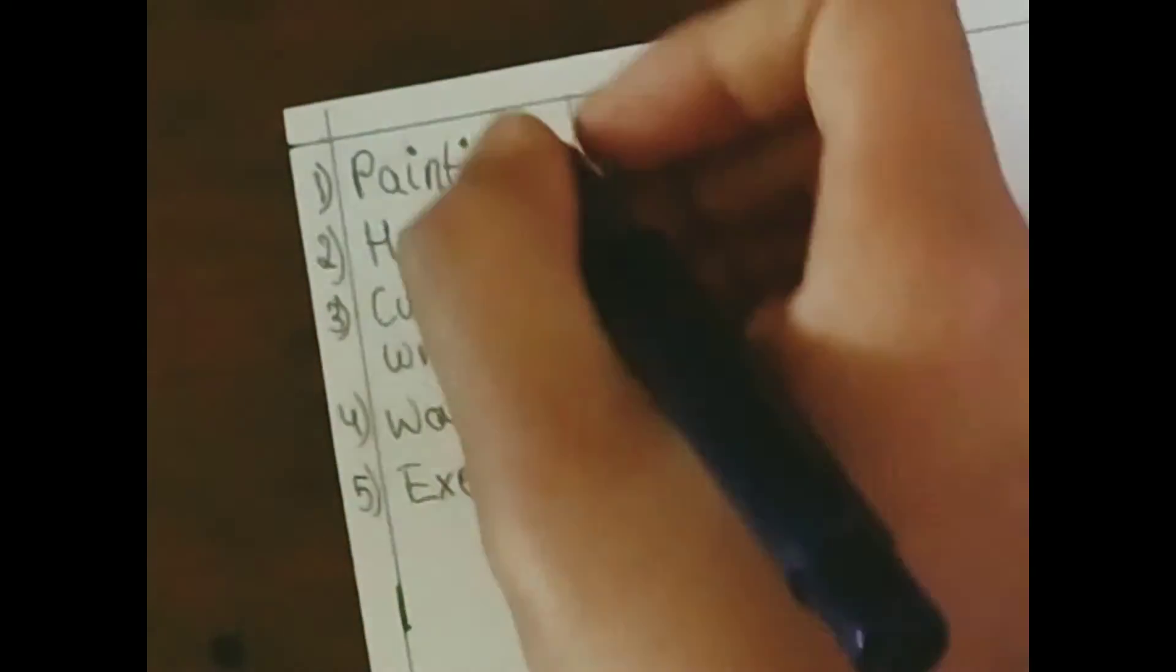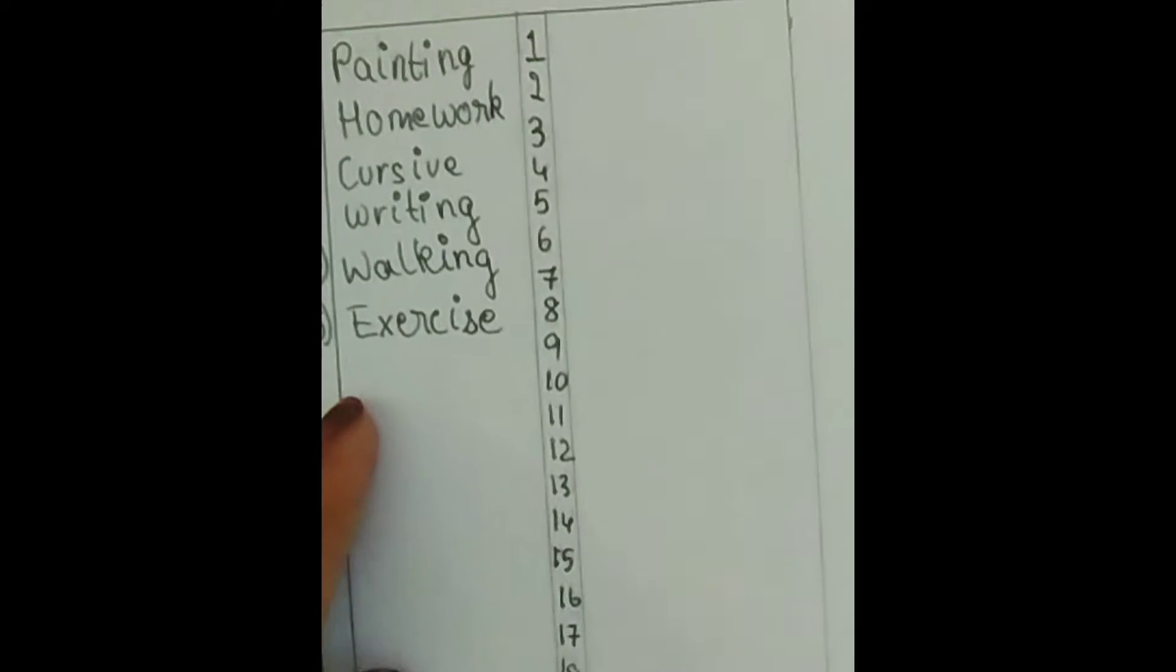At this thin column, write the numbers till 31 which is going to be your dates. If you want, you can even draw lines for each date so that it will be easy to mark. Or you can even skip this step.